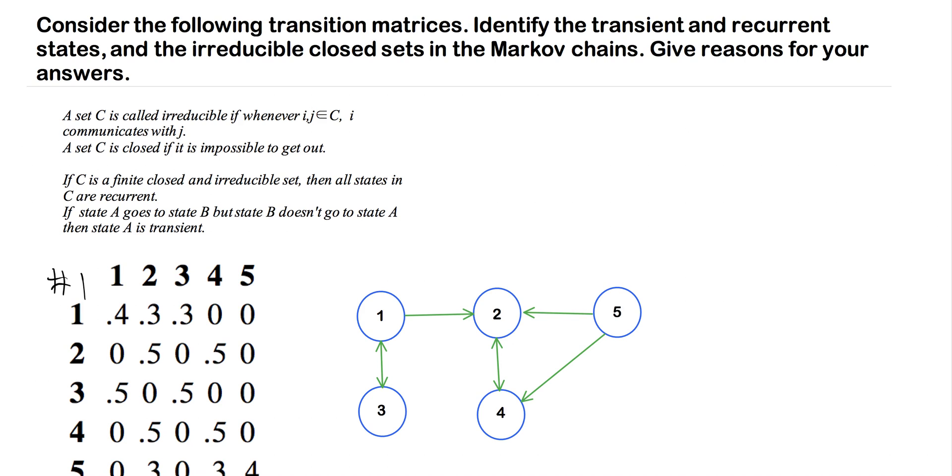Consider the following transition matrices. Identify the transient and recurrent states and the irreducible closed sets in the Markov chains. Give reasons for your answers.